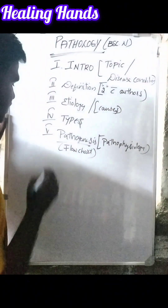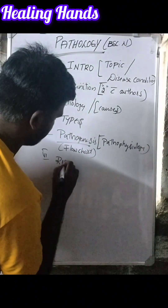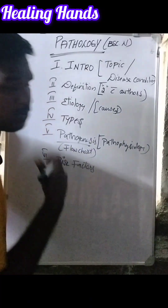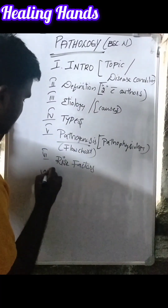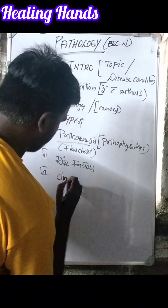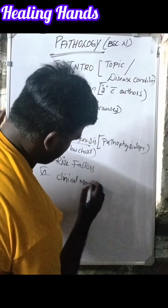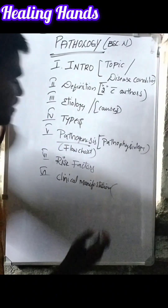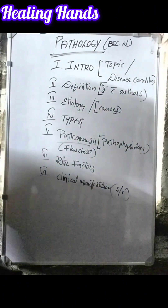The sixth heading is risk factors — this means who are prone to get the particular disease condition. Next we should write the clinical manifestation, which means the signs and symptoms.